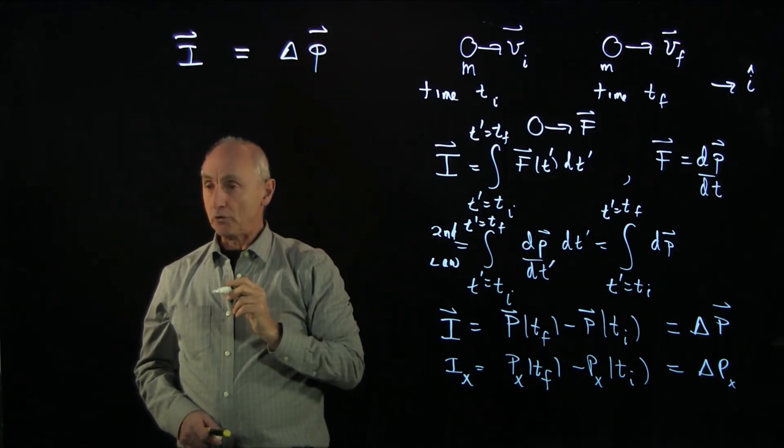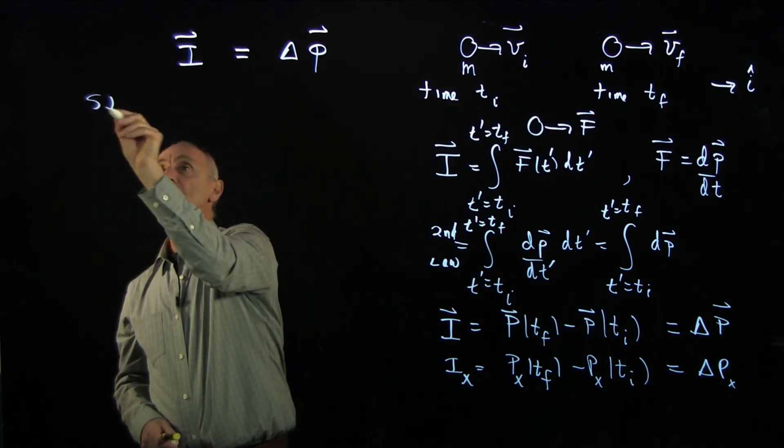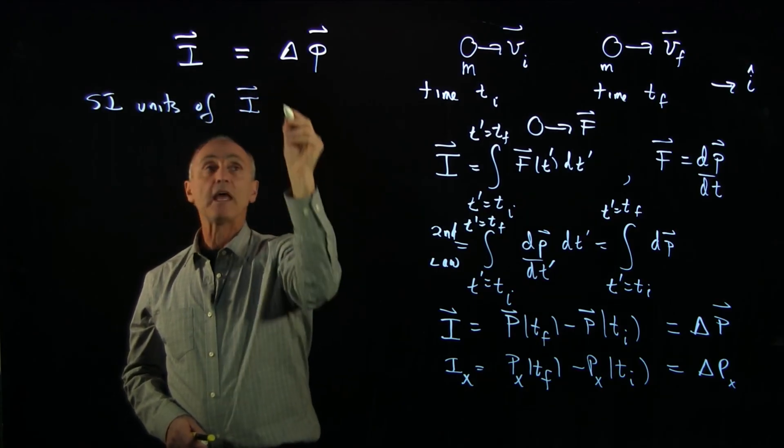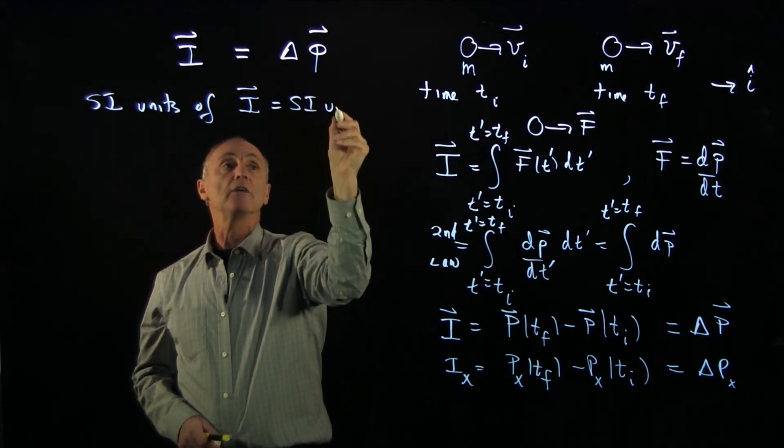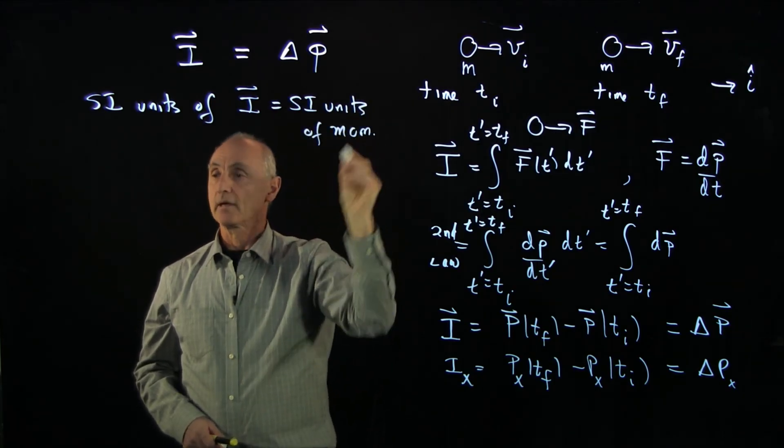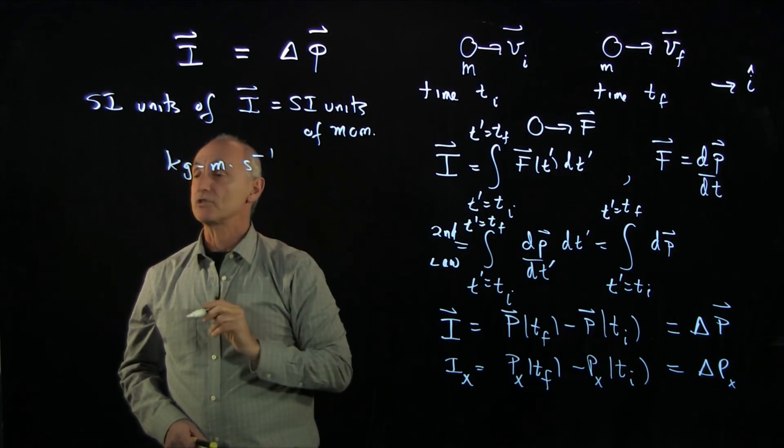We have that impulse causes momentum to change. And so we can see that the SI units of impulse are the same as the SI units of momentum, which we saw before was kilogram meter inverse seconds.